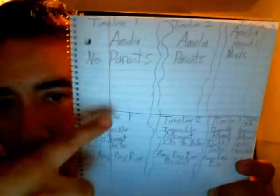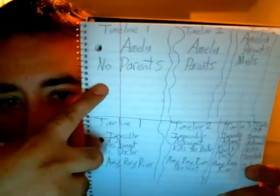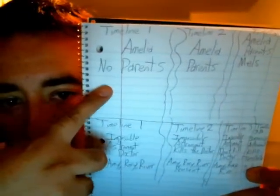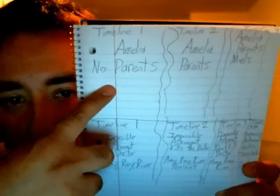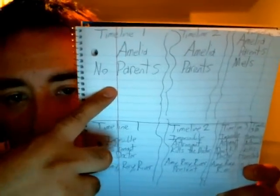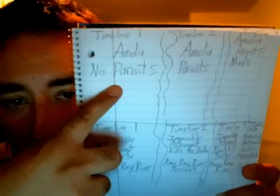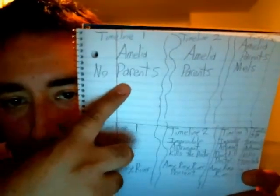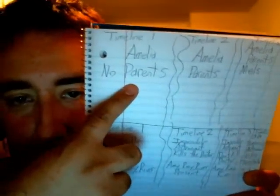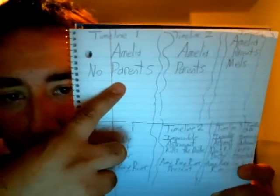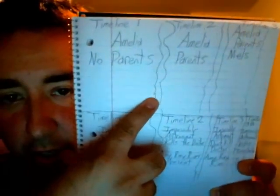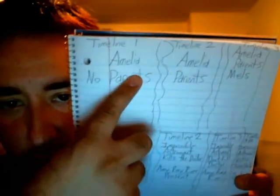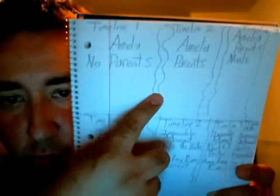In Timeline 1, you have Amelia Pond where her parents were inside the crack, and she grew up without her parents. And basically this is the crack in the skin of the universe — this is a crack in a bedroom wall.